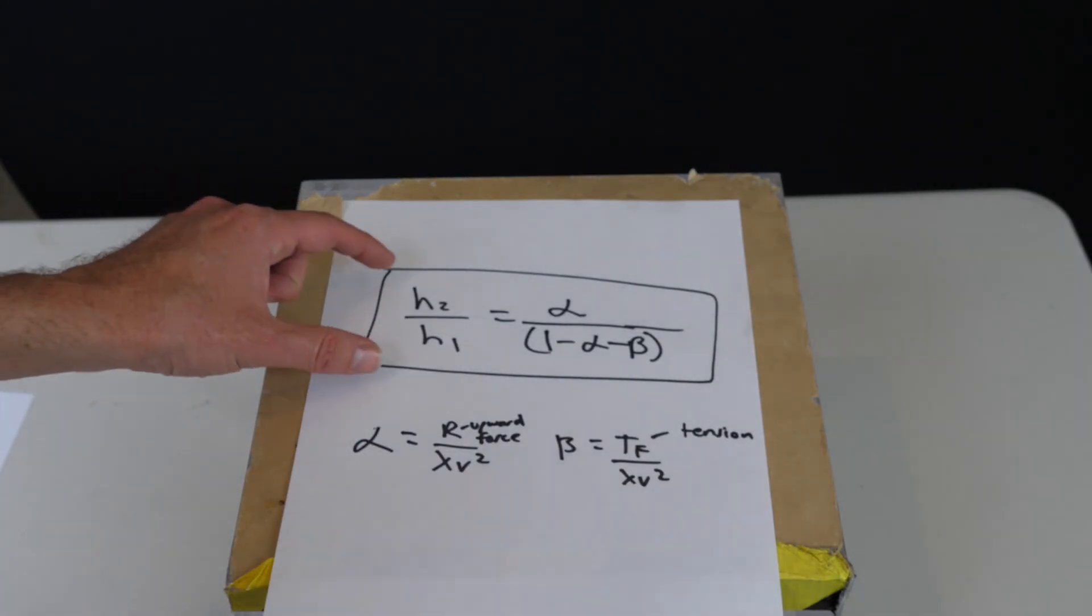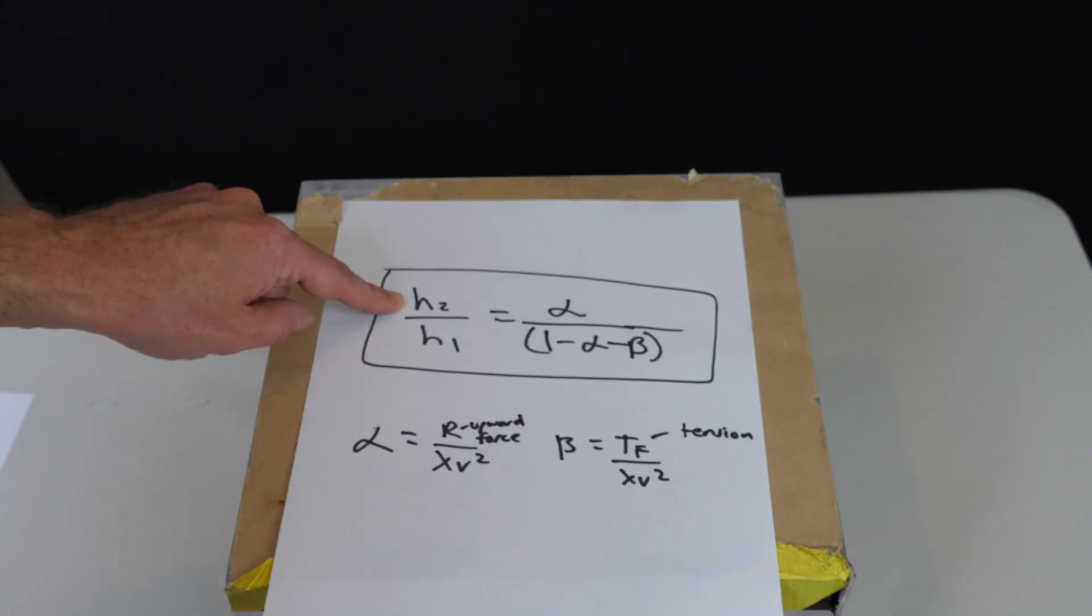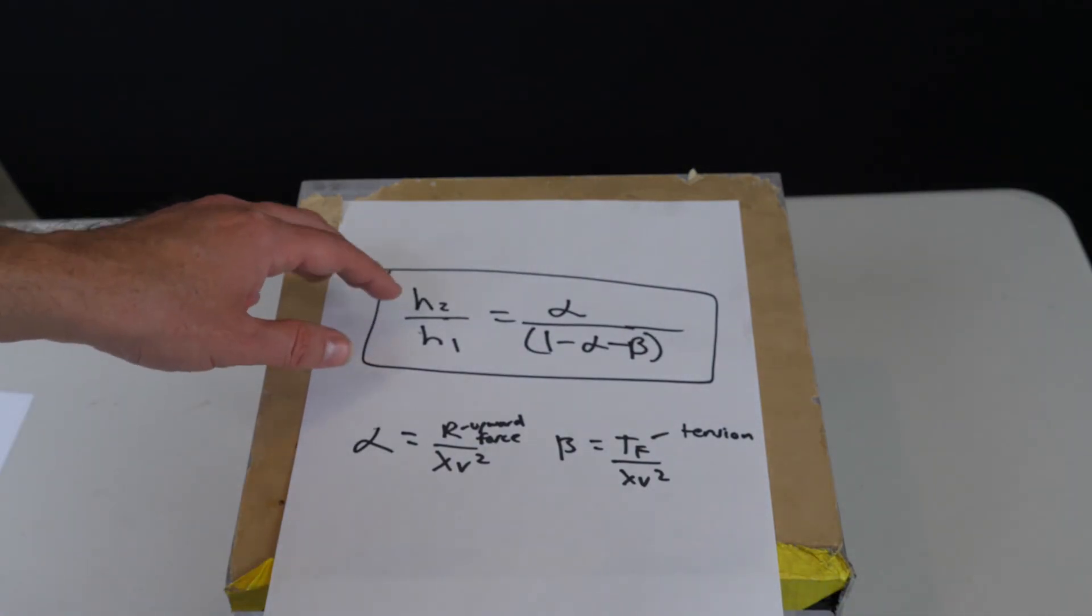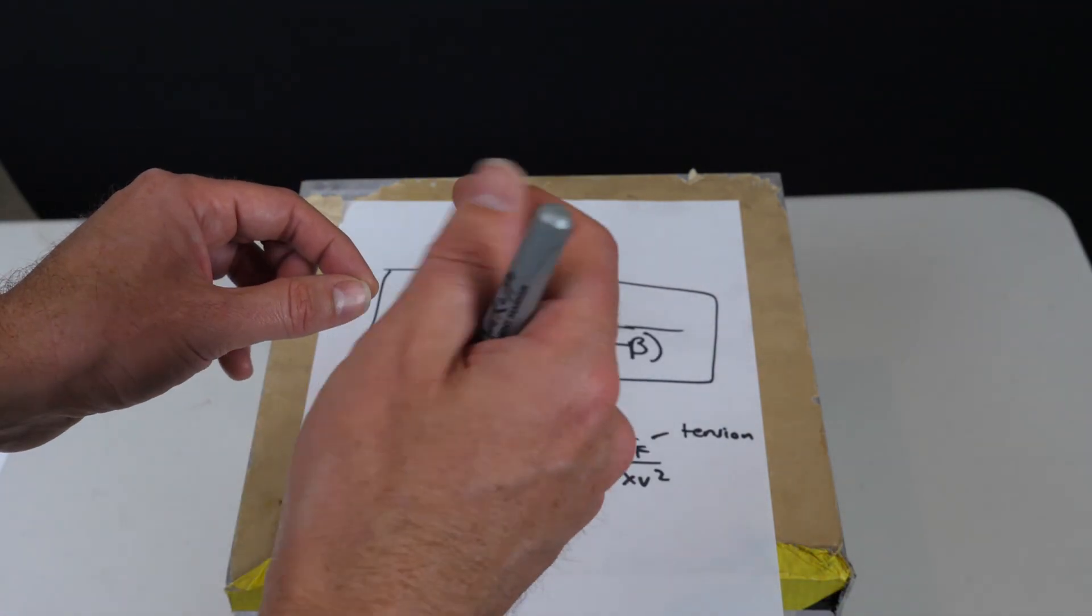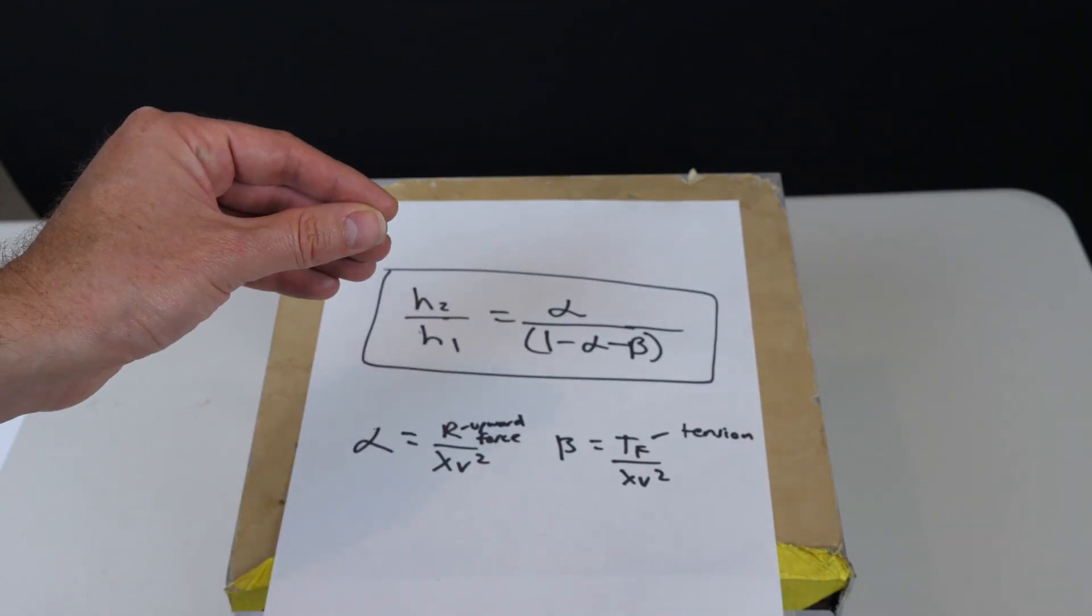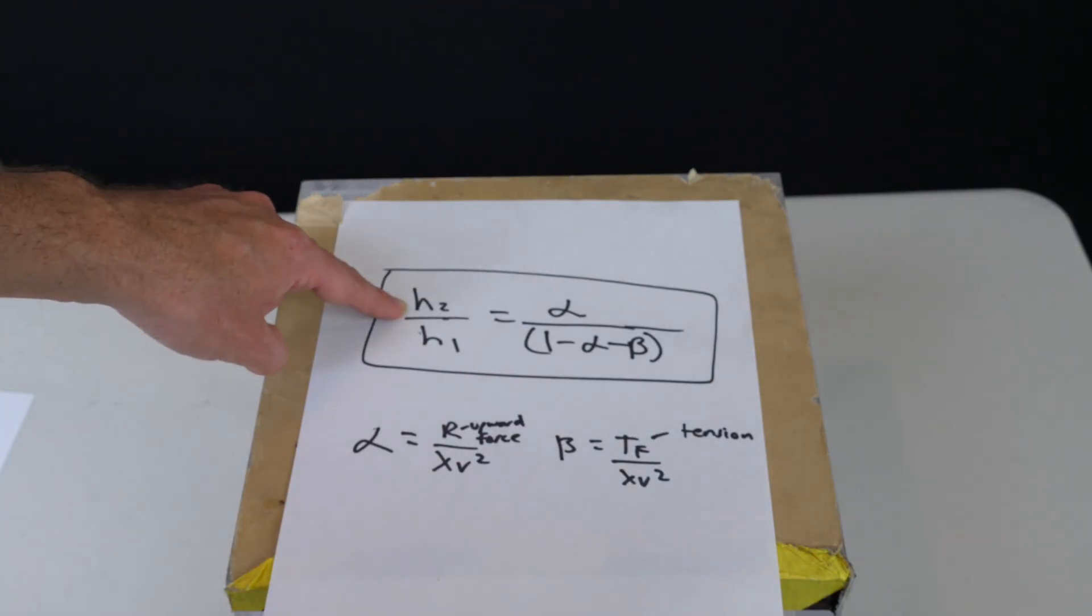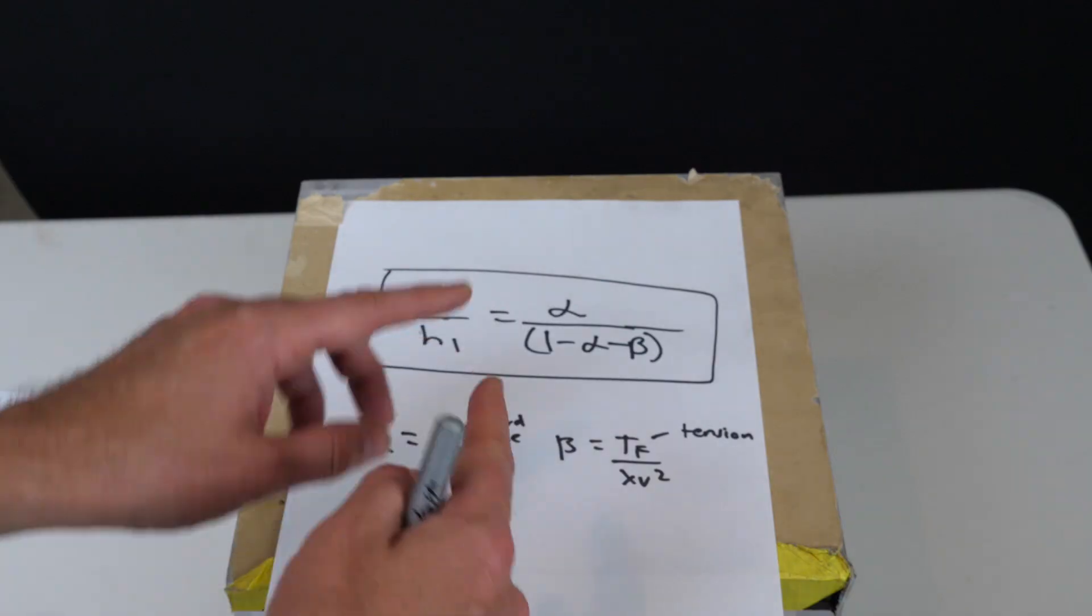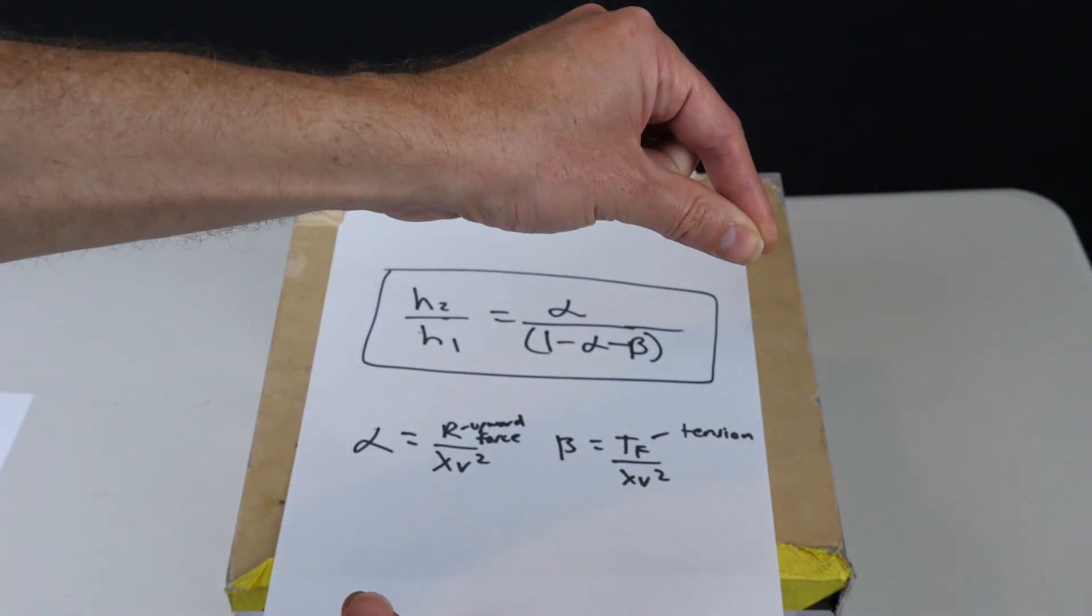So what's cool is when you work through the math, you end up with this final equation where you can predict the height of the chain above the beads. And what this also means is that the longer the chain is, the longer you drop it or the higher you drop it from, the higher this H2 will be. So the larger the height will be up and over the edge of the jar.